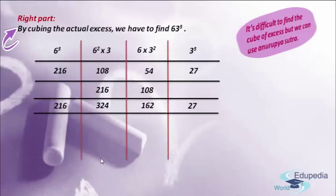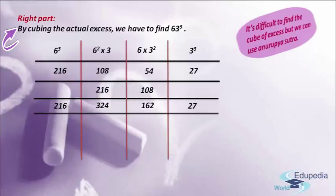When using Anurupena Sutra to find the cube of a two-digit number, in each part — the second, third and fourth parts — we should have only one digit. In the fourth part we have 27, which is a two-digit number, so we take the digit in the one's place, that is 7, in our answer and send the remaining digit 2 as carry-on to the third part. Adding 162 plus 2, we get 164.